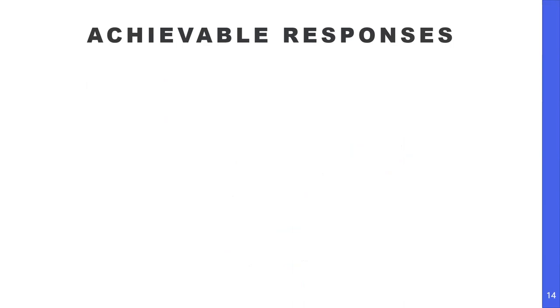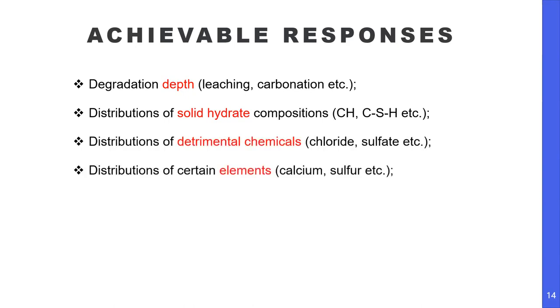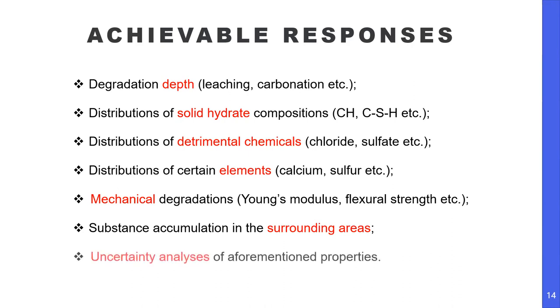With the CPM model, which is quite complex from a mathematical point of view, the most sensible question is: what can the method do? Based on my experience and past research, I can confirm: firstly, it can produce accurate degradation depths; it can also detail the distribution of solid hydrate composition, detrimental chemicals, and elements of interest; it can predict the mechanical degradation of material as well as substance accumulation in surrounding areas for pollution assessment. Furthermore, the CPM model can also be used to generate uncertainty analysis of information properties.